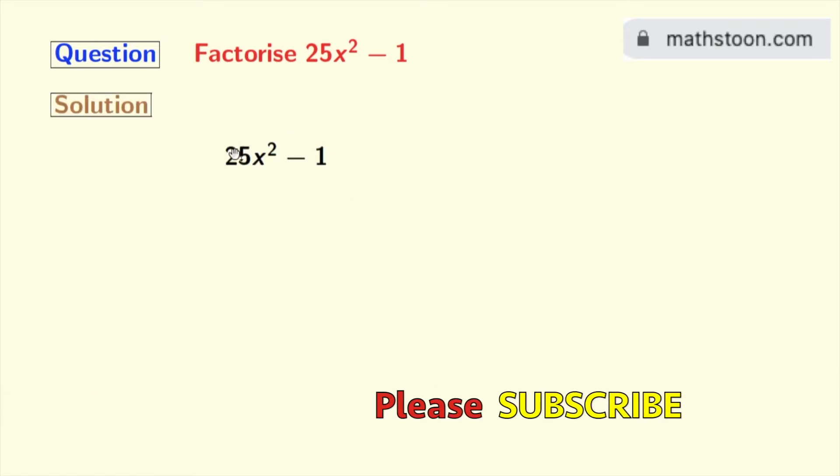This is our given expression. To factorize this, we will firstly express each of these terms as a square of something. To do that, we will express this as 5x whole square minus 1 whole square.